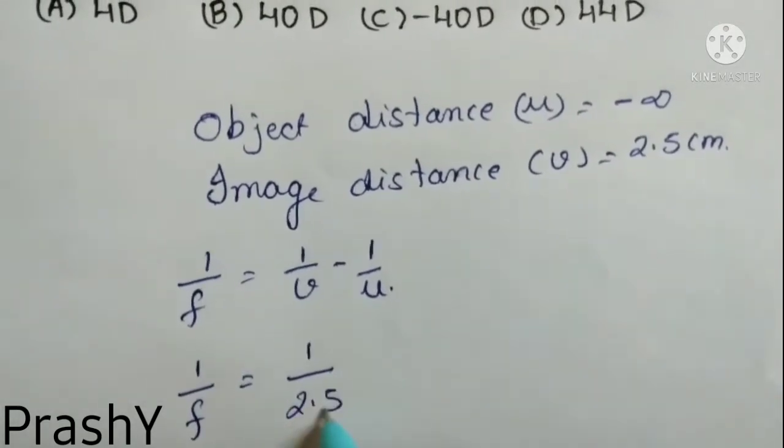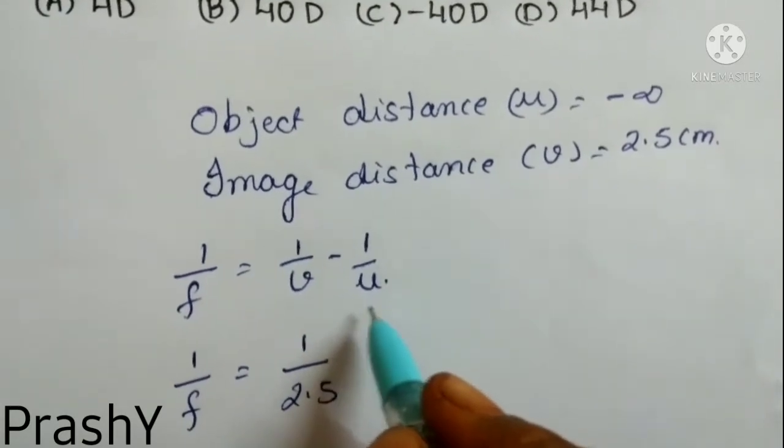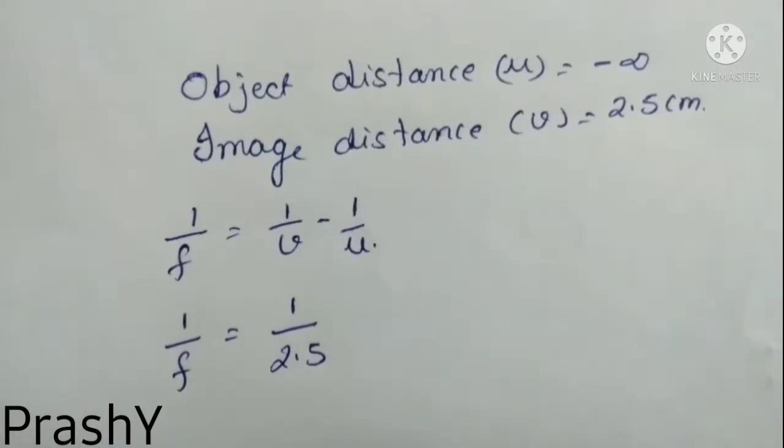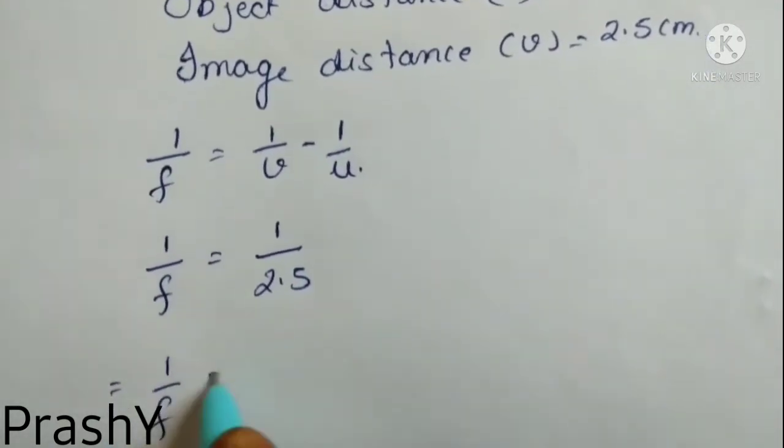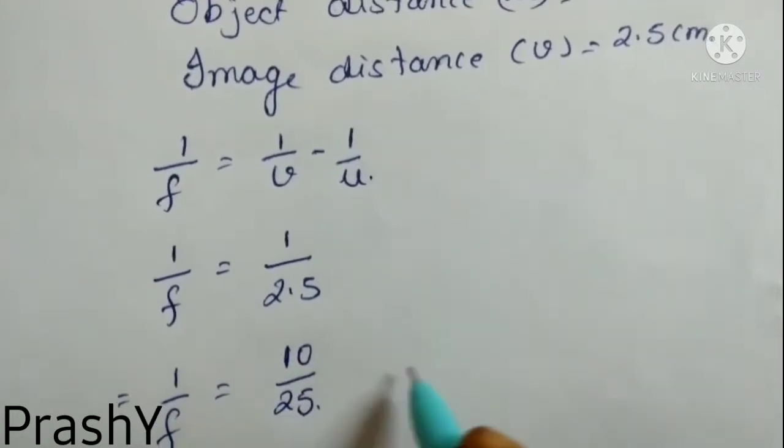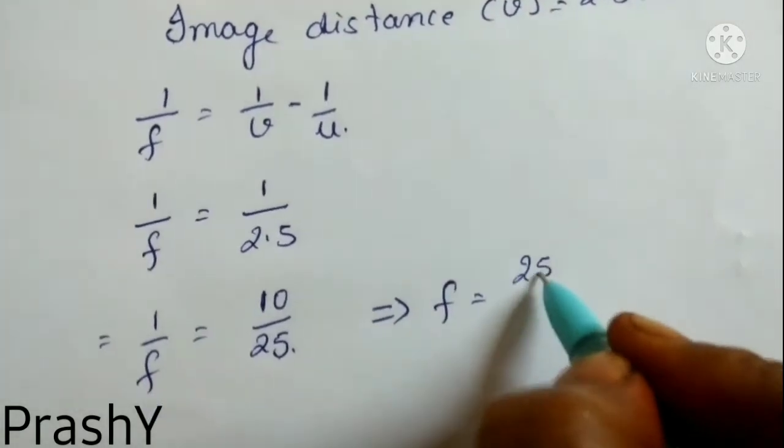So 1 by f is equal to 1 by 2.5. This can be written as 1 by f is equal to 10 by 25, so ultimately we will get f value as 25 by 10.